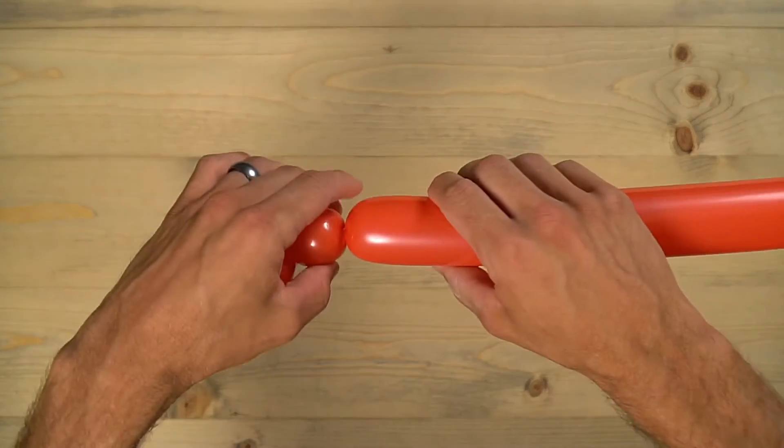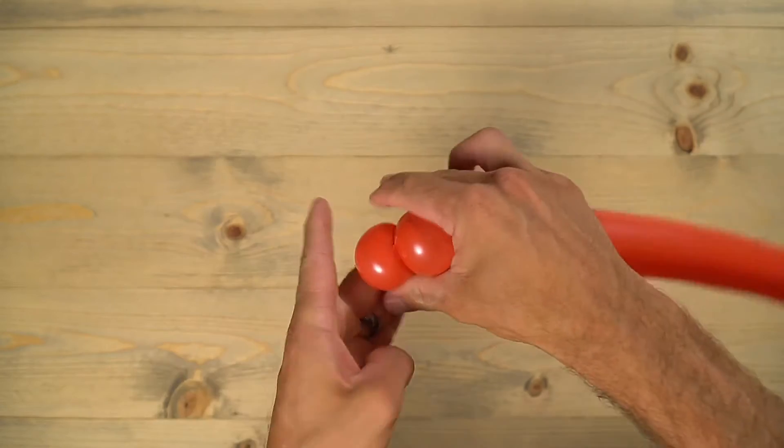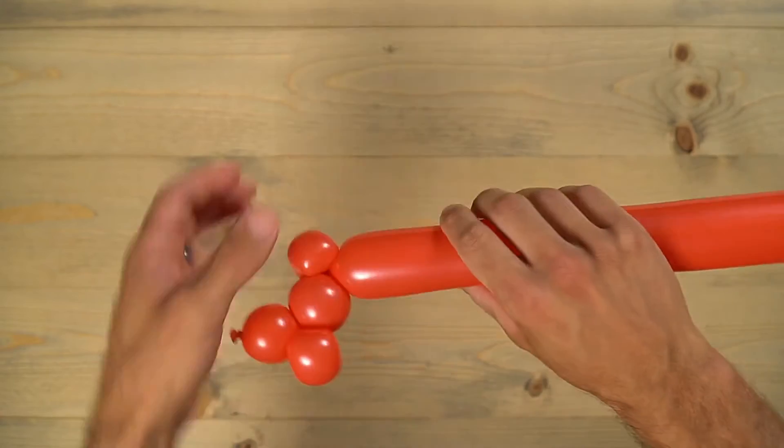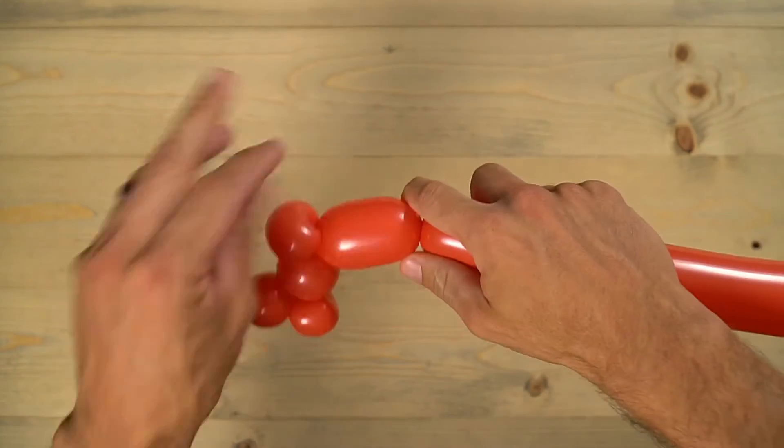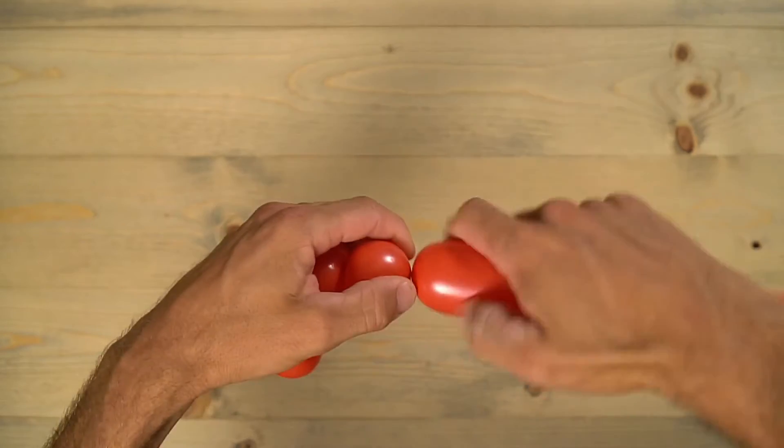One inch bubble there for the knee. And then the next bubble is about three fingers across. And then one more one inch or smaller bubble that you're going to pinch twist.